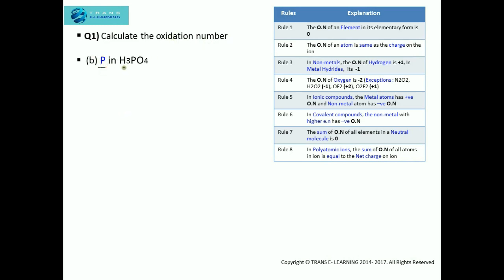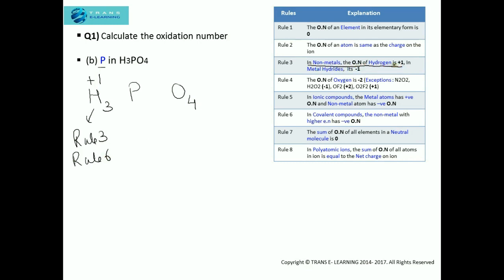Calculate the oxidation number of phosphorus in phosphoric acid. Step one: write the oxidation number of the individual atoms. The oxidation number of hydrogen will be plus one, as per rule three and rule six. Rule three states that in nonmetals, the oxidation number of hydrogen is plus one. Rule six states that in covalent compounds, the nonmetal with higher electronegativity has a negative oxidation number. Hydrogen has far lower electronegativity than phosphorus and oxygen, so it has a positive oxidation number of plus one. We take the oxidation number of phosphorus as x, and oxygen is minus two as per rule four.